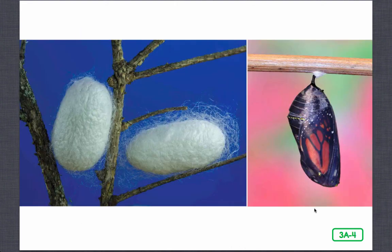Once the larvae have eaten all that they can eat, they take a break. Sometimes people call this next stage a resting stage, but the larvae are hardly resting. A larva often spins a cocoon to protect itself during the pupa stage, when it will remain quite still for several weeks. Inside this shell-like covering, the pupa transforms into something that looks altogether different than before. Some insects have a soft cocoon for the pupa stage, and some, like the butterfly, have a harder case called a chrysalis.